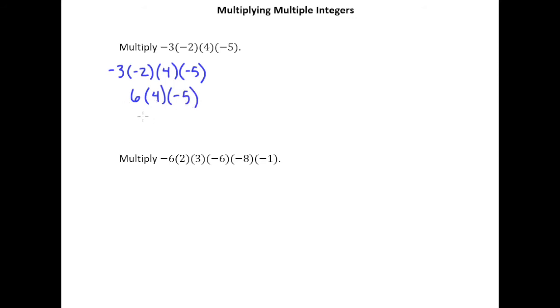A positive 6 times a positive 4 is a positive 24. And then we're going to multiply that by negative 5. I might want to do a little long multiplication over here. And I'll get 120, but of course a positive times a negative is a negative 120.